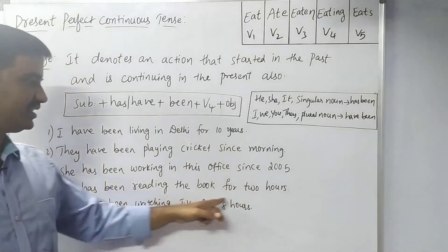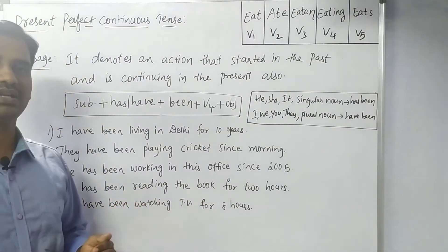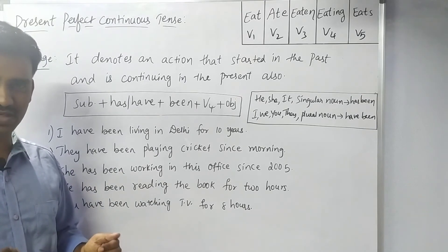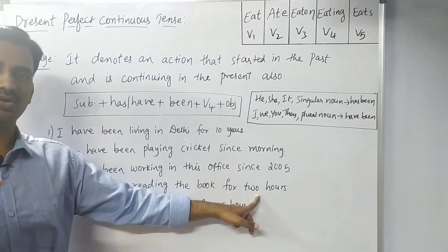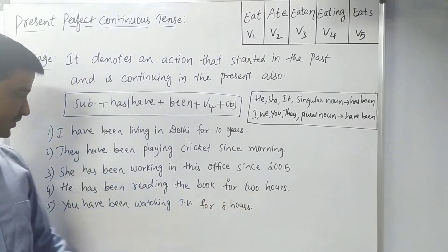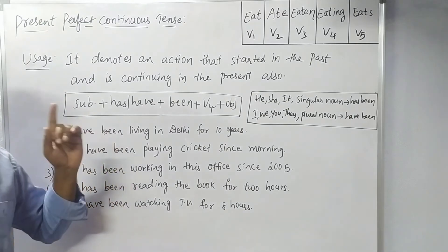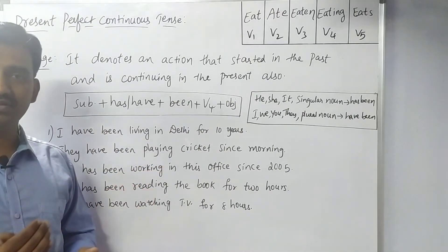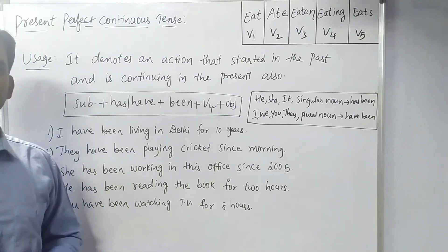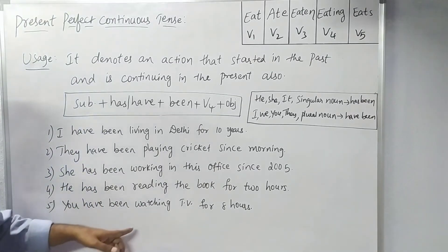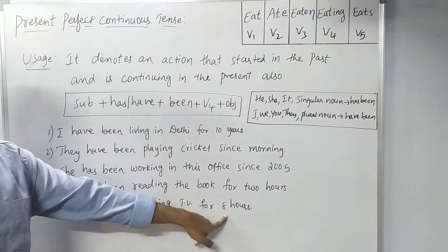For example: 'He has been reading the book for 2 hours.' The action started 2 hours ago and is still continuing. Another example: 'You have been watching TV for 8 hours.' The action started in the past and is continuing in the present — this is how Present Perfect Continuous works.